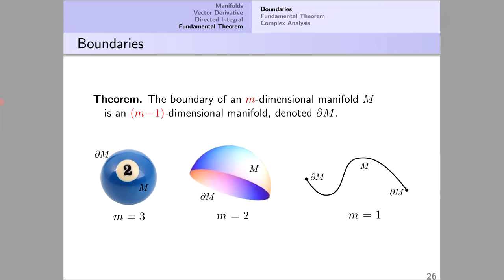And finally, here's the M equals 1 case. The manifold is a curve. Its boundary consists of its end points, and we consider points, individual points, to be zero-dimensional manifolds.